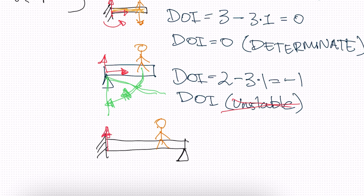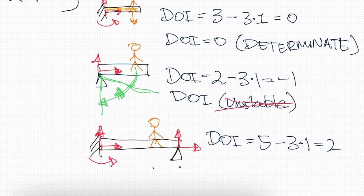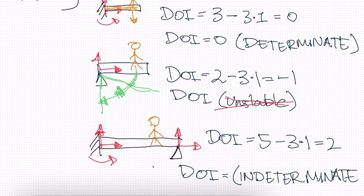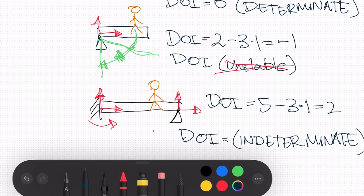So we have one reaction, two reactions, three, and then here we're going to have one and two. So our DOI is equal to five minus three times one, is equal to two. So our DOI is indeterminate, and to the second degree.